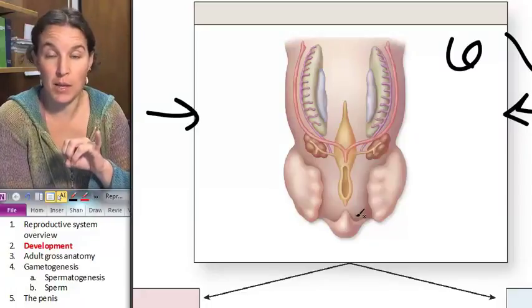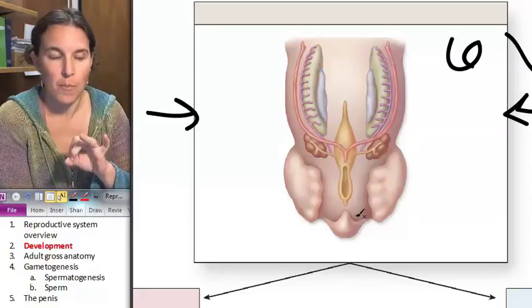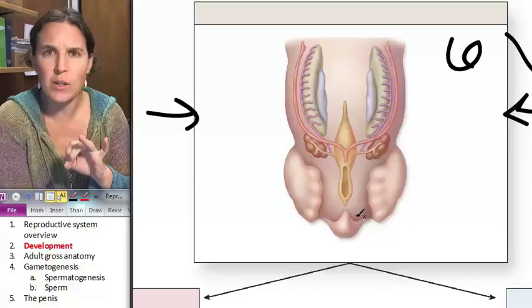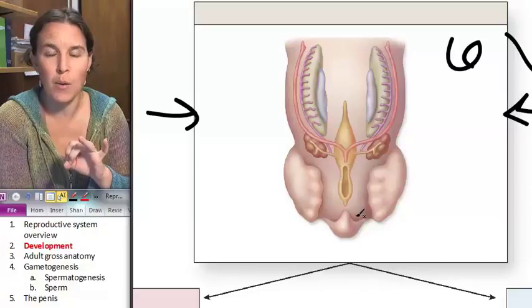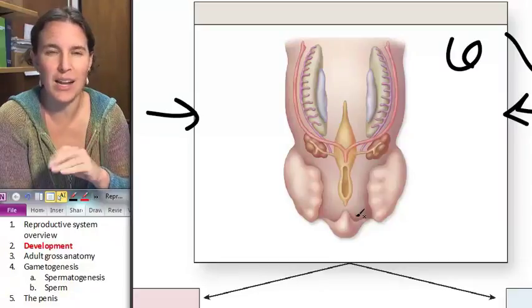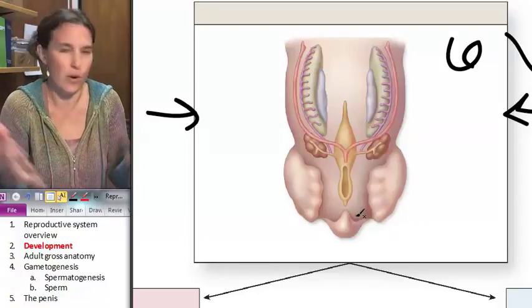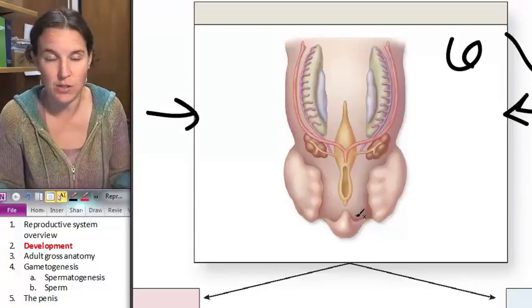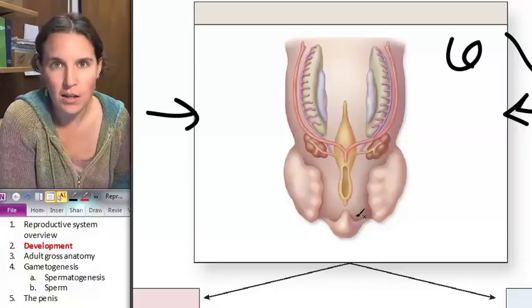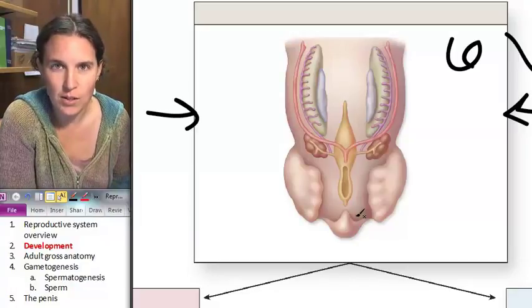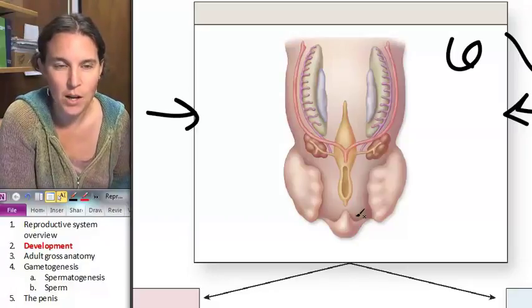and that means that it's a hole that everything goes through. Gametes go through it to make babies. Poop goes through it to get out. Pee goes through it, everything. Just if you want it to get out of your body, throw it into the cloaca and it will get out. Do you have a cloaca now as a grownup? Do you have a sewer? Hopefully not.